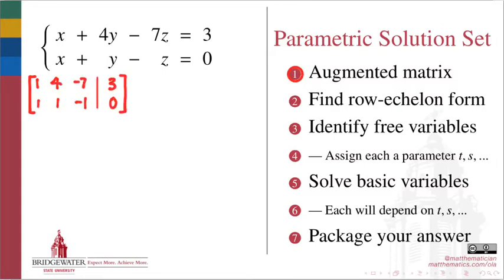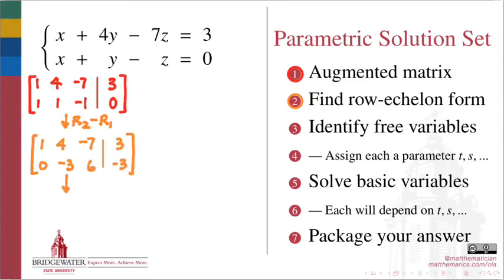Second, use elementary row operations to find the row echelon form of your augmented matrix. You may choose to reduce completely into reduced row echelon form, but any form in which the pivots can be identified is appropriate.